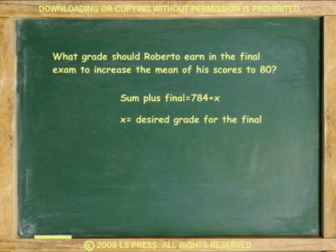The sum of 10 exams plus final is 784 plus x, where x is the grade he needs for the final. The new mean is 80. New number of exams, n equals 11. So 80 equals 784 plus x divided by 11.